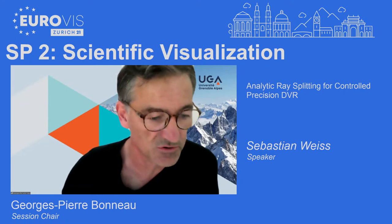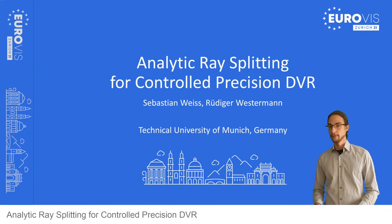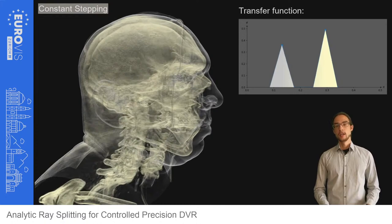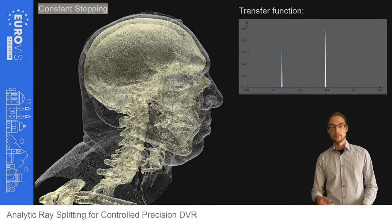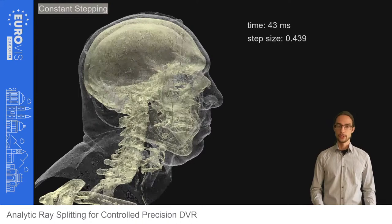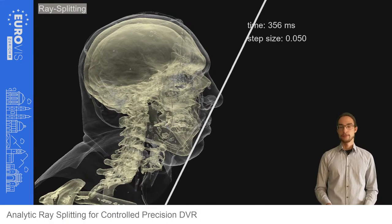My name is Sebastian Weiss and I will be presenting our work on analytic ray splitting for controlled precision direct volume rendering. Direct volume rendering with a fixed step size can be computed very efficiently and works well for smooth transfer functions. But as the peaks of the transfer function get more and more narrow, artifacts begin to occur. These are especially distracting during motion. To reduce these artifacts the step size has to be reduced, but this drastically increases the computation time. We propose a ray splitting algorithm that can solve these difficult cases without any noise.